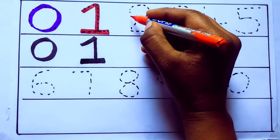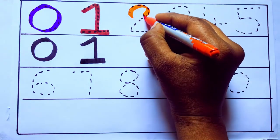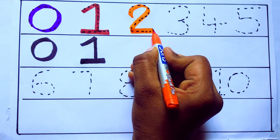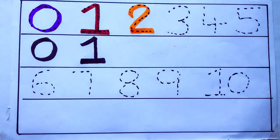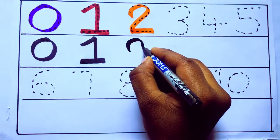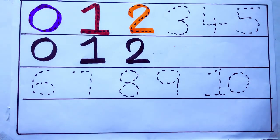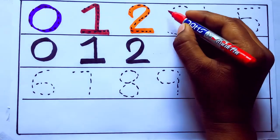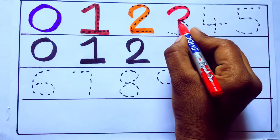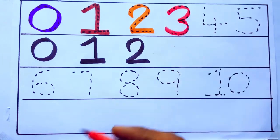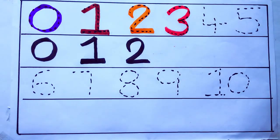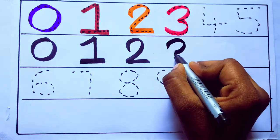Orange color 2 T, W, O, 2. Number 2. Red color 3 T, H, R, E, E, 3. Number 3.